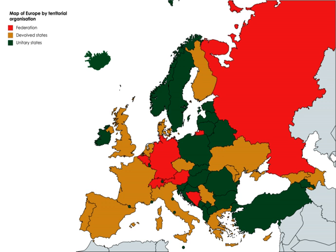The UAE is a federal absolute monarchy of the six ruling families of the United Arab Emirates, with the Emir of each Emirate being an absolute monarch and the Emir of Abu Dhabi being also the president of the UAE.